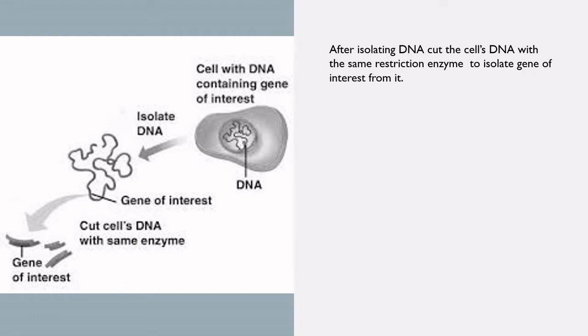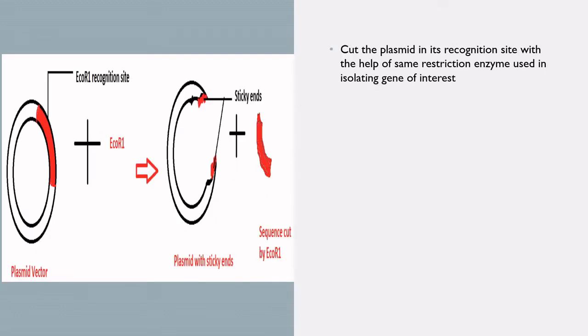After isolating donor DNA from the cell, cut the DNA with a restriction enzyme to isolate the gene of interest. Cut the plasmid at its recognition site using the same restriction enzyme used to isolate the gene of interest. After cutting, the plasmid will have sticky ends or blunt ends, depending on the type of restriction enzyme used.